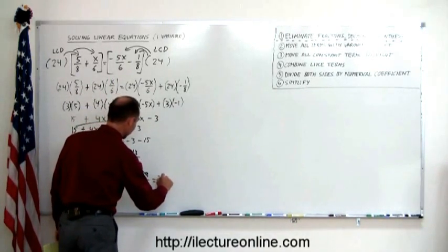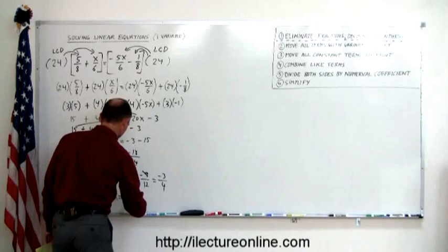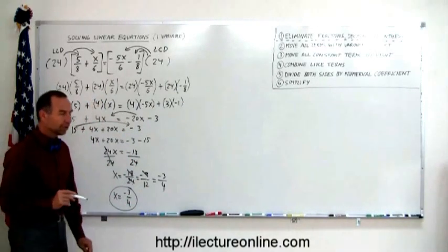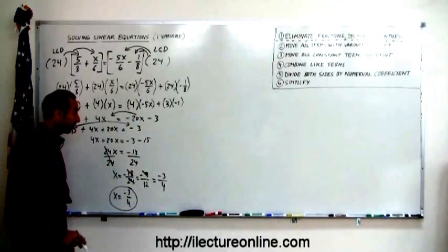Now you notice that they're both divisible by 3. So you can simplify it some more. So this can be divided by 3. So this is minus 3. This can be divided by 3. So this is 4. And so finally x equals minus 3 over 4 is your final answer. So always simplify if you can simplify, especially with fractions that are even or divisible by 3 or by some common number.